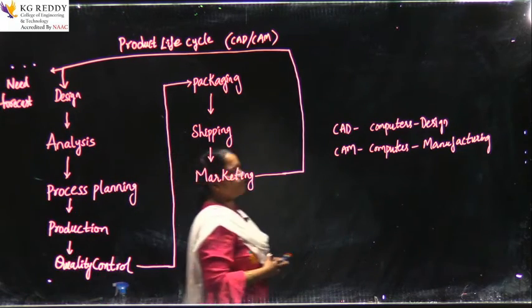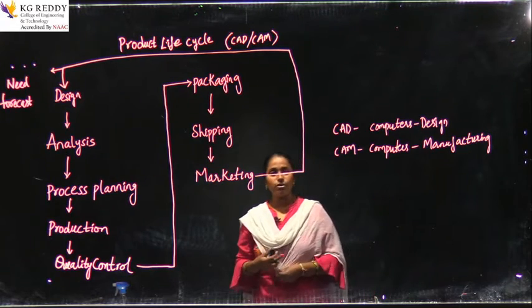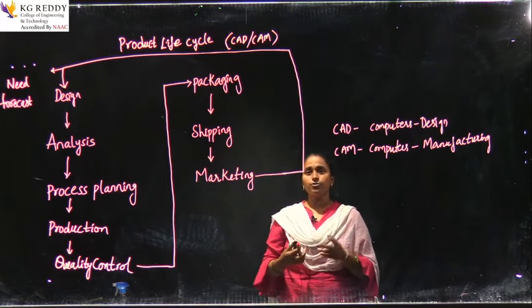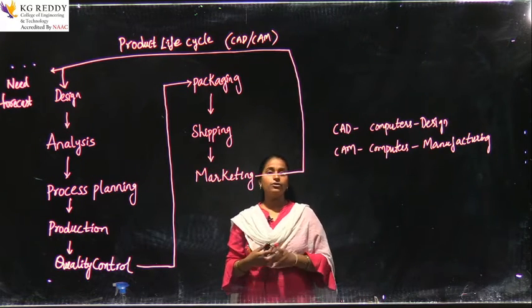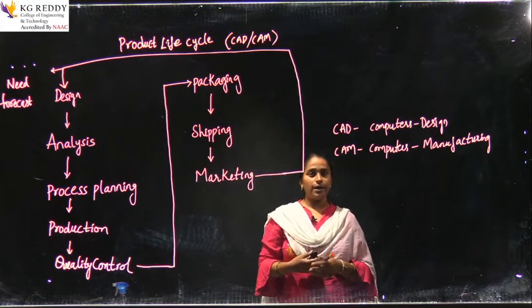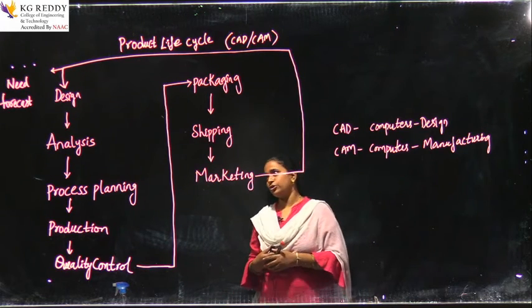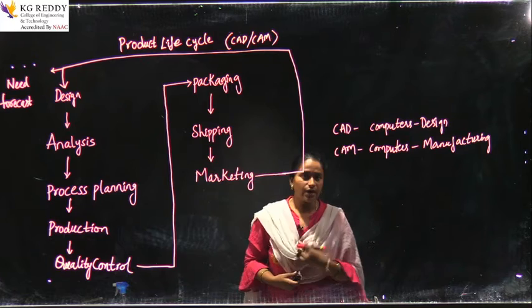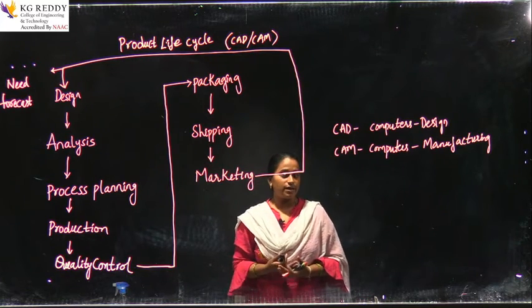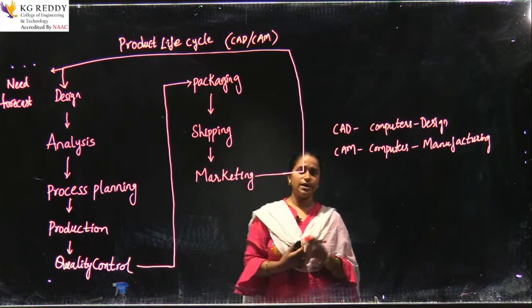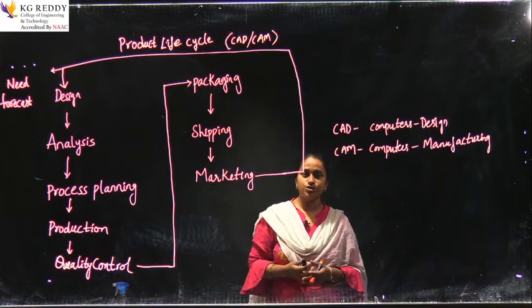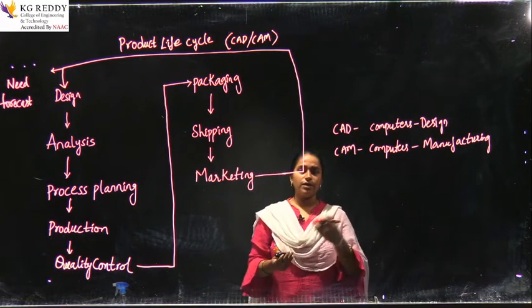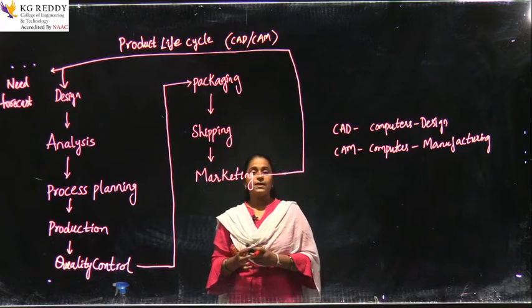Looking at the product life cycle flowchart, we can see where design and manufacturing are applicable. The next stage after need is design. Previously in olden days, we used drafting sheets. As first-year engineering students, you take drawing sheets, go to the lab, and draft drawings like isometric views and orthographical views. However, the design drafted cannot be immediately considered an approved design, because as engineers we cannot produce all the efficient drafting for a particular product without evaluation.